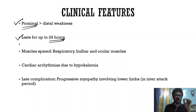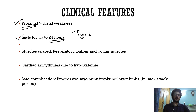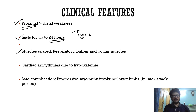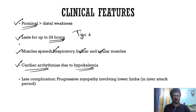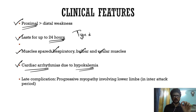Clinical features include flaccid paralysis that is predominantly proximal. Attacks can last up to 24 hours, though Type 2 attacks are briefer. Despite quadriparesis or quadriplegia, respiratory, bulbar, and ocular muscles are spared. Respiratory paralysis is rare; however, the patient can develop cardiac arrhythmias due to hypokalemia.